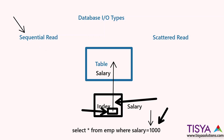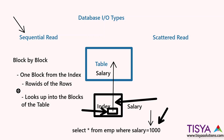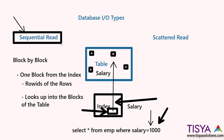What is a sequential read? It's fairly simple — it does IO block by block. It fetches one block from the index, looks up the row IDs of rows that satisfy the condition, then based on those row IDs it goes to the table. In the table, the rows might be spread across different blocks, so it has to fetch them one block at a time. This is a sequential read.